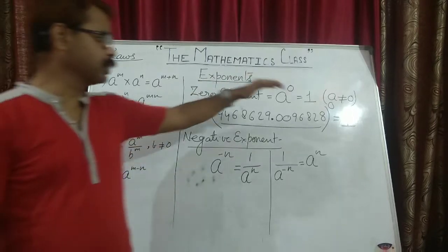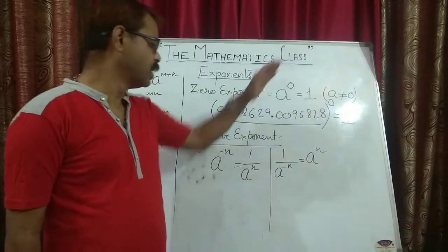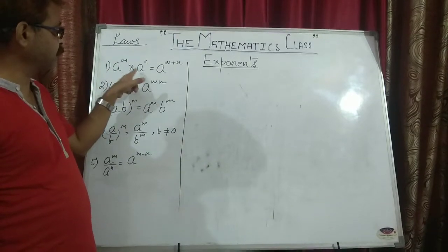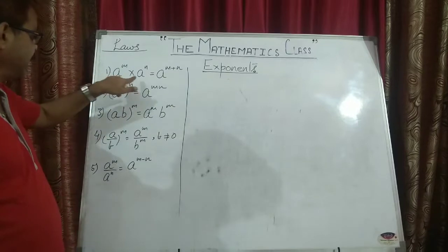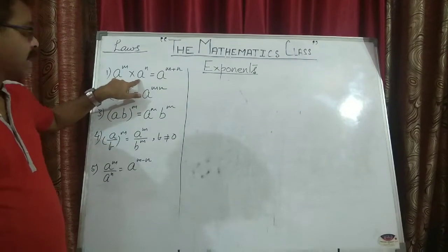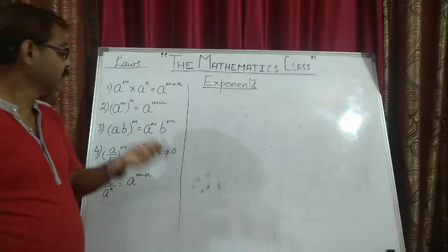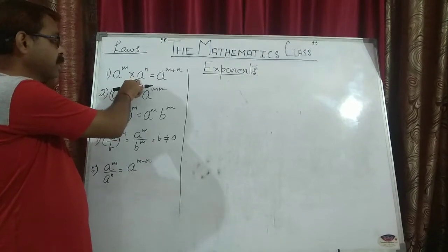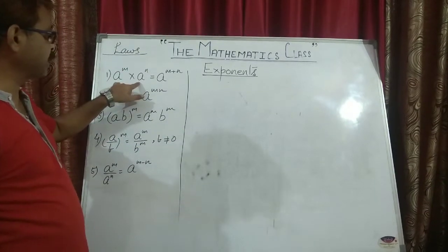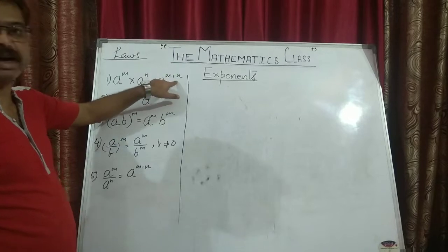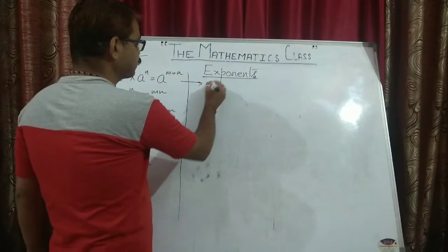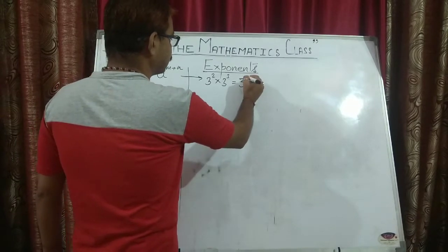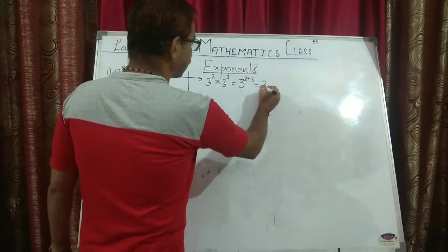You need to memorize these five laws. You need to remember what is the value of a to the power 0, and what is the value of a to the power minus n. The first law is: a to the power m into a to the power n equals a to the power m plus n. When the bases are same and powers are different, if the two terms are multiplied, the powers are added. For example, 3 to the power 2 into 3 to the power 3 can be written as 3 to the power 3 plus 2, that is 3 to the power 5.